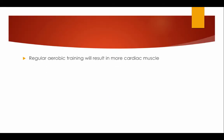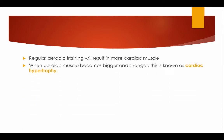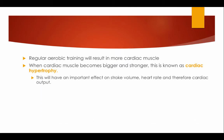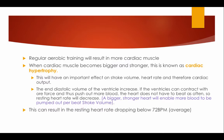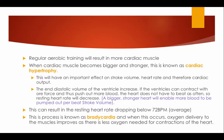Regular aerobic training results in more cardiac muscle. When cardiac muscle becomes bigger and stronger, this is known as cardiac hypertrophy. This has an important effect on stroke volume, heart rate, and therefore cardiac output. The end diastolic volume of the ventricle increases — if the ventricles can contract with more force and push out more blood, the heart does not have to beat as often, so resting heart rate decreases. A bigger, stronger heart enables more blood to be pumped out per beat, increasing stroke volume. This can result in resting heart rate dropping below 72 beats per minute, known as bradycardia, and oxygen delivery to the muscles improves as less oxygen is needed for heart contractions.